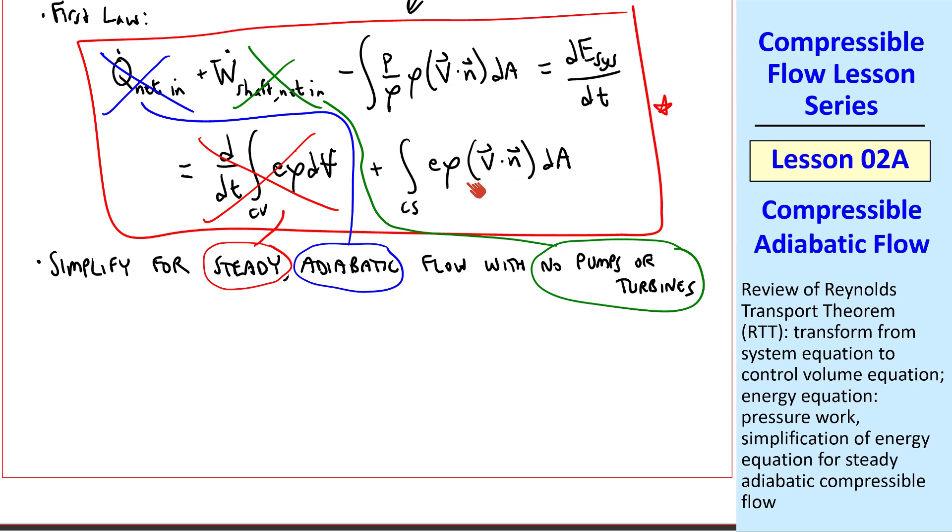Thus, this equation simplifies to integral over the control surface, e, plus p over rho, rho, V dot N, dA, equals zero. I should point out that some authors like to put a circle on this integral to indicate that we're integrating over the entire control surface. But I chose not to do that here.